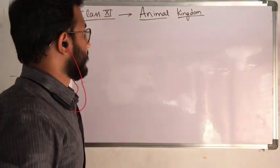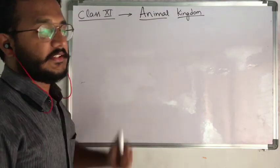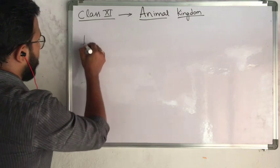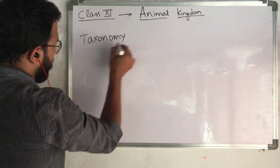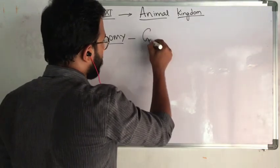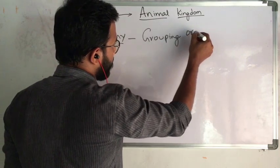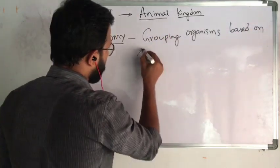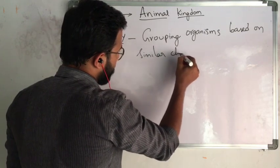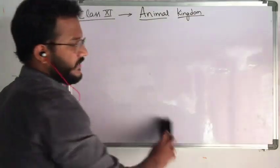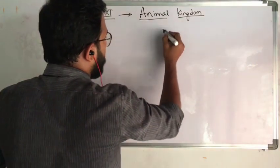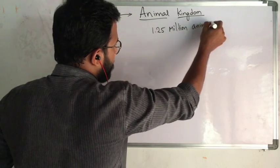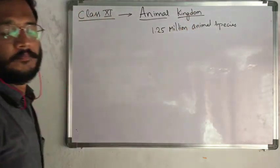Welcome back. Today we are going to discuss Animal Kingdom, a chapter for class 11th students. Before going into the topic, we have to know a term: Taxonomy. Taxonomy is nothing but a phenomenon of grouping organisms based on similar characters. For example, animal species on earth are kept under Animal Kingdom — there are about 1.25 million animal species kept under Kingdom Animalia.